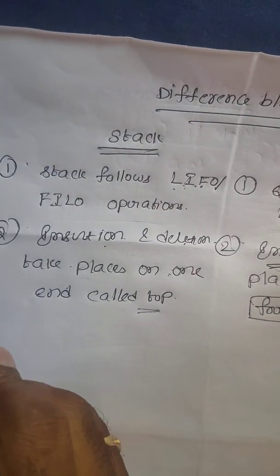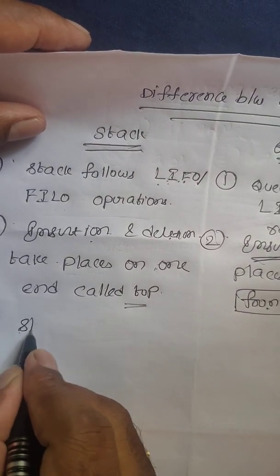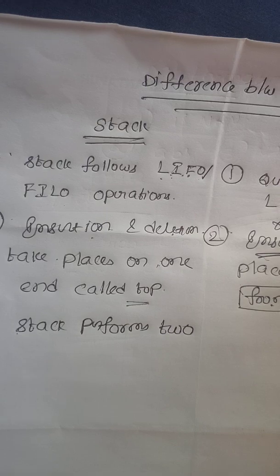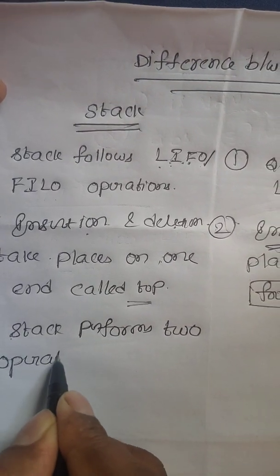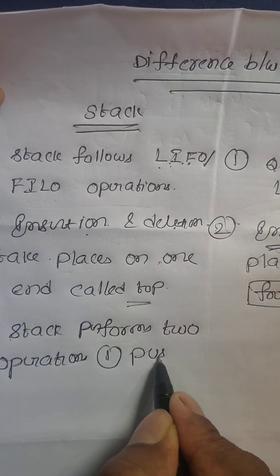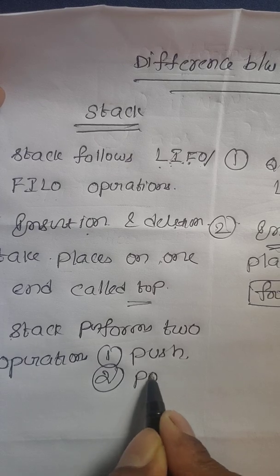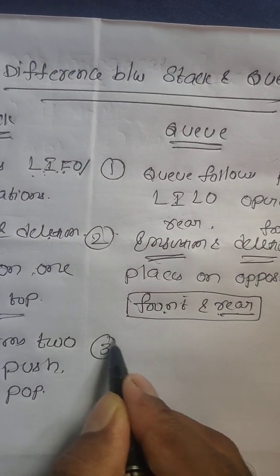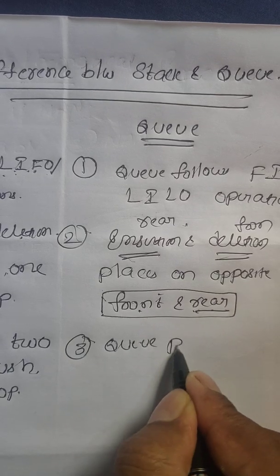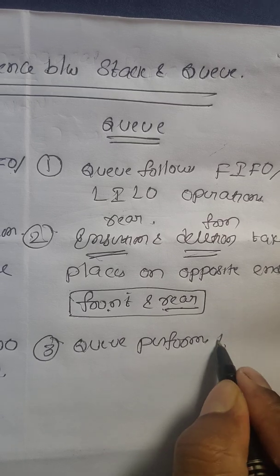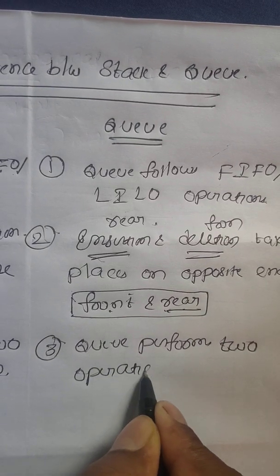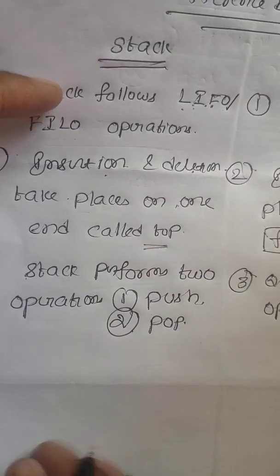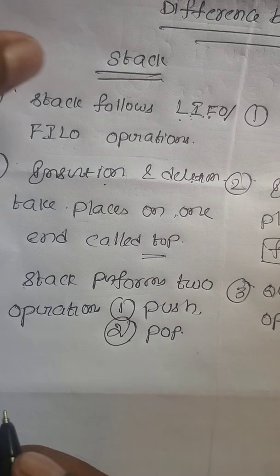The third difference: stack performs two operations — number one is push, and number two is pop. Whereas queue also performs two operations — number one is front and number two is rear.